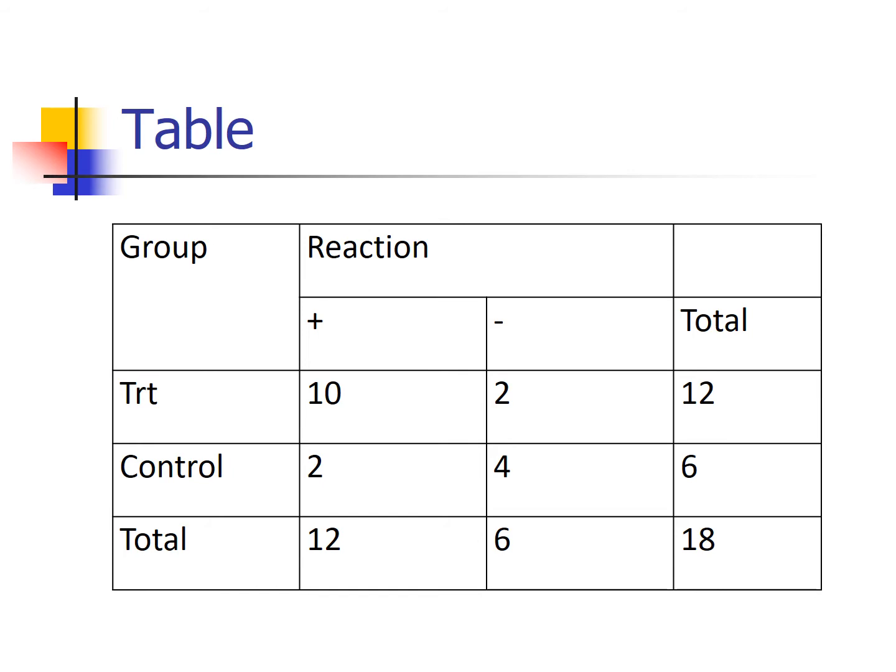If the smallest expected cell count is above five, then they're all above five and we're good. But if the smallest expected cell count is below five, then in theory they're all supposed to be above five — so if even one of them is below five, we need some sort of alternative.